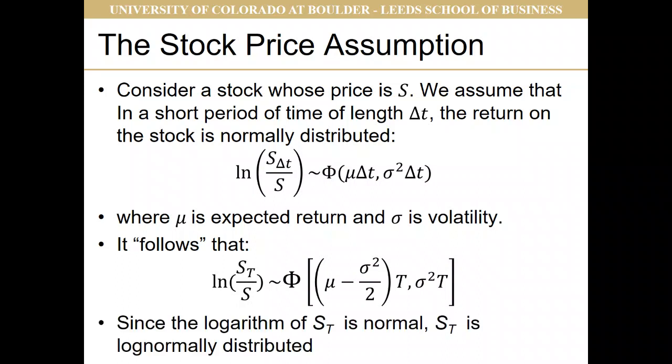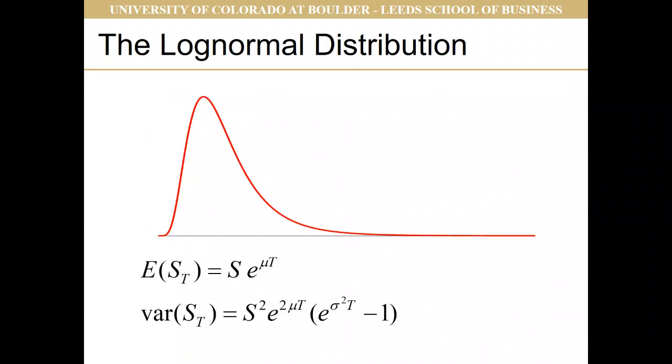This is known as a log-normally distributed variable. The log-normal distribution has the expectation of the stock at time T equal to S·e^(mu·T), and the variance of the stock at time T equal to S²·e^(2·mu·T) times the quantity (e^(sigma²·T) minus 1). Those are not formulas that you need to know.